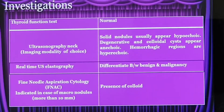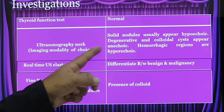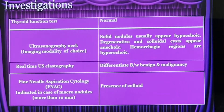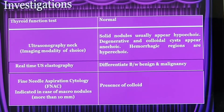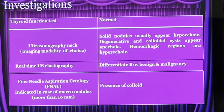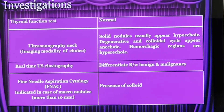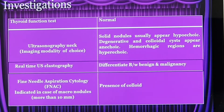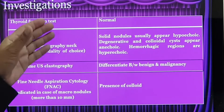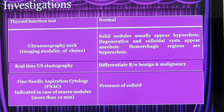The next investigation will be ultrasonography of the neck. That will give me a diagnosis that it is multinodular goiter. When you do an ultrasound, it gives us an idea whether it is benign or malignant, or if it is thyroiditis — it gives us a basic idea. Let me first finish the main investigations, then I will tell you when to suspect malignancy.